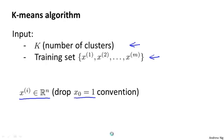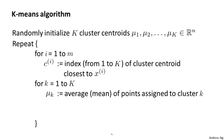The first step is to randomly initialize k cluster centroids, which we're going to call mu_1, mu_2, up to mu_k. In the earlier diagram, the cluster centroids corresponded to the location of the red cross and the blue cross — so there we had two cluster centroids, where maybe the red cross was mu_1 and the blue cross was mu_2. More generally, we would have k cluster centroids rather than just two.